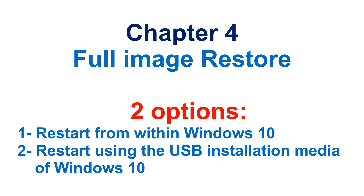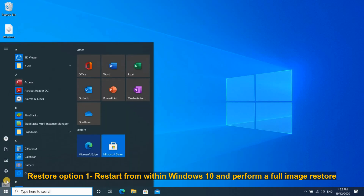In Chapter 4, I'll show you the full image restore options. You basically have two options. The first is to restart your Windows 10 machine from the Recovery menu under Settings — that is, of course, if your Windows 10 machine is still running. The second option is to restart your PC using the USB installation key of Windows 10 and then going to Recovery Options. Let's start with option 1.